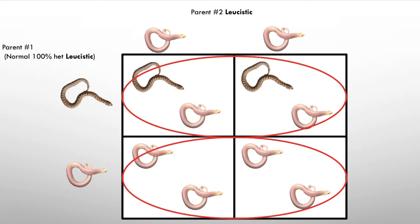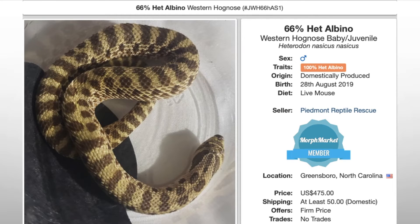Now let's get into something a little more confusing. Here's an example from Morph Market using albino, which is another recessive gene. What happens when you see an animal listed as 66% het albino, or 66% het leucistic, or toffee, or whatever? Where does that statistic come from? You'll also see this in ball pythons, carpet pythons, and other reptiles.